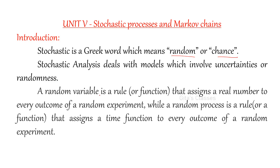A random variable — we have already seen what is a random variable. It is a rule for outcomes of any experiment. For every outcome, if you assign some number, then it is a random variable. For example, if you are tossing two coins: HH, HT, TH and TT. We cannot do calculations with these variables, so if you want to do mathematical calculations, we need numbers. We can define the variable X, assigning some number. Instead of a number, if you are assigning some variable, it is a function of T.